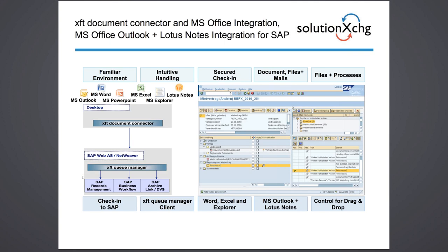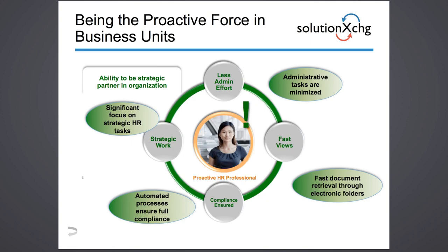So how can we improve that? Using an electronic personnel file allows us to do that. We have all the tools necessary to integrate documents from Microsoft Word, Outlook, Excel, even Lotus Notes — you stay in your familiar environment. There is intuitive handling, secure check-in of documents, and full integration into your application environment. This minimizes administrative tasks, leads to fast document retrieval through electronic folders, and allows automated processes to ensure full compliance and retention management — freeing up significant time to focus more on strategic HR work.